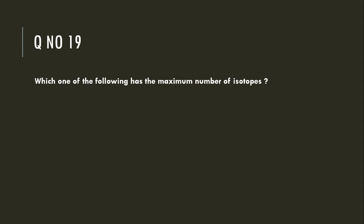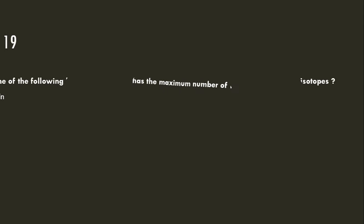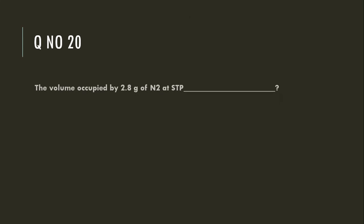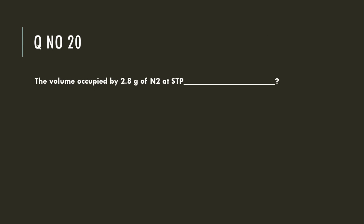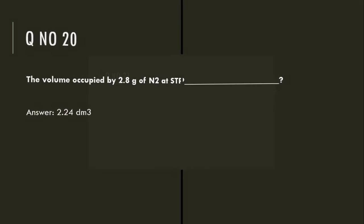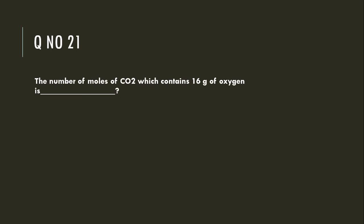Which one of the following has the maximum number of isotopes? Tin (10). The volume occupied by 2.8 grams of nitrogen at STP is 2.24 dm³. The number of moles of carbon dioxide which contains 16 grams of oxygen is 0.5.